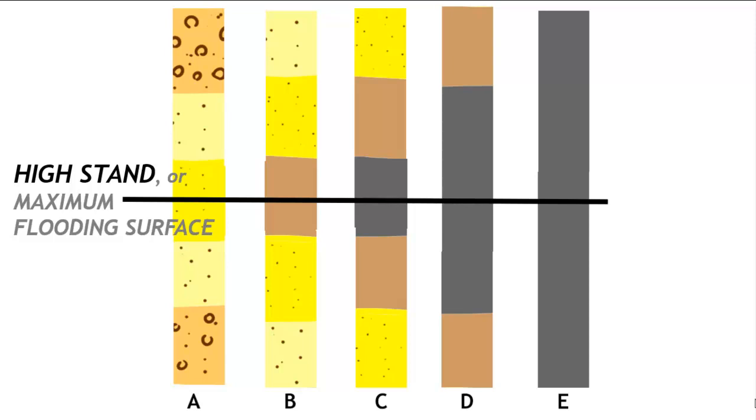So we can interpret this sequence of adjacent cores then as showing us evidence of a transgression followed by a regression. And right there in the middle would be that high stand or maximum flooding surface.